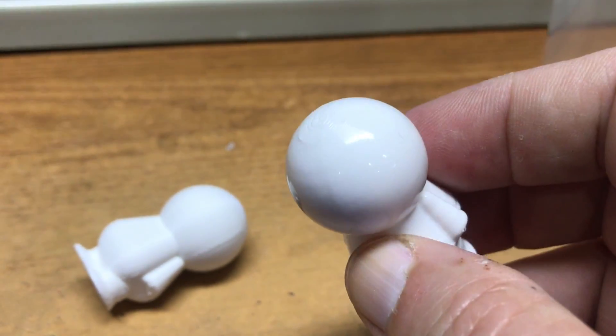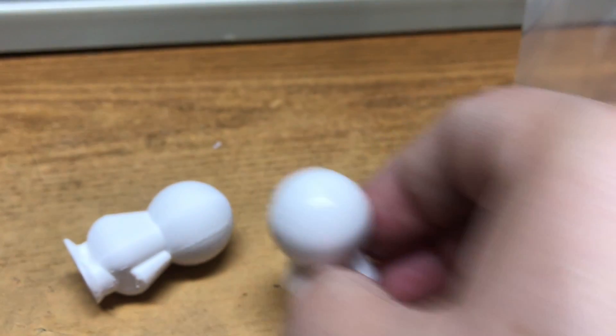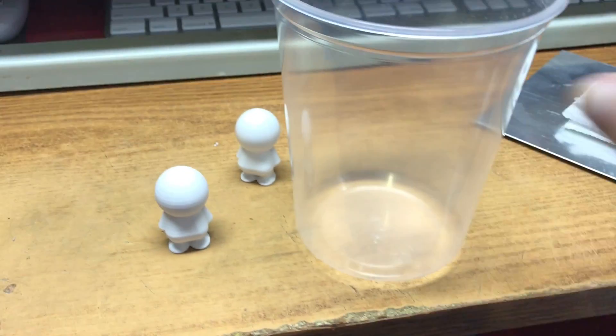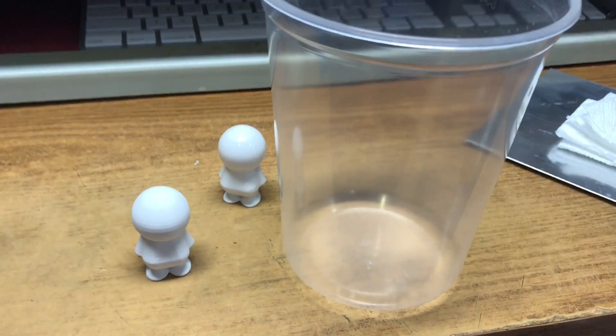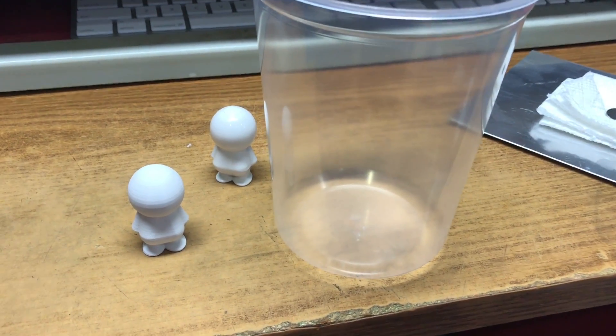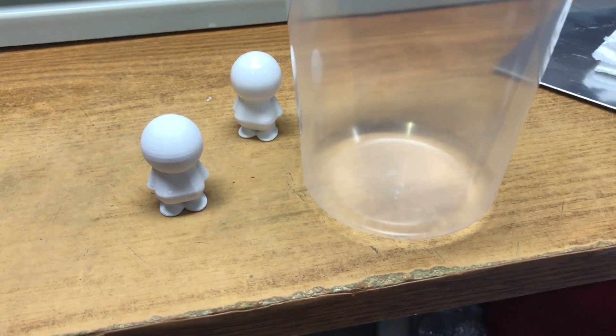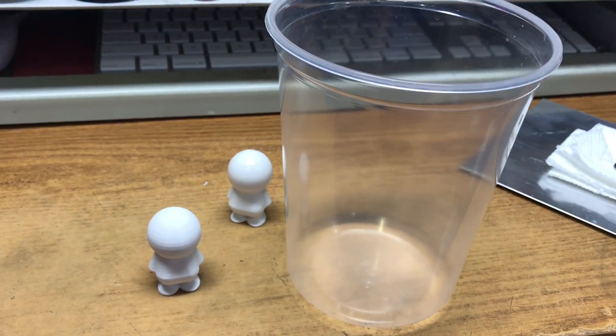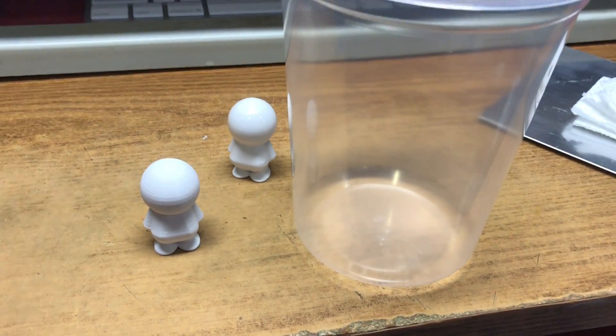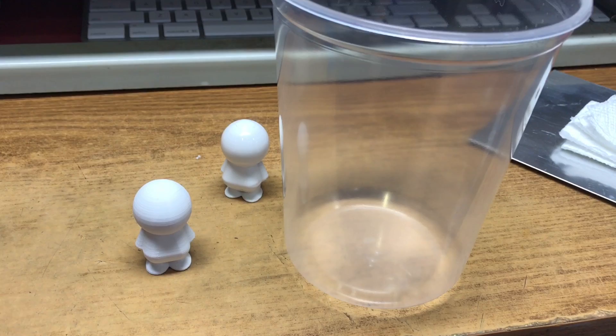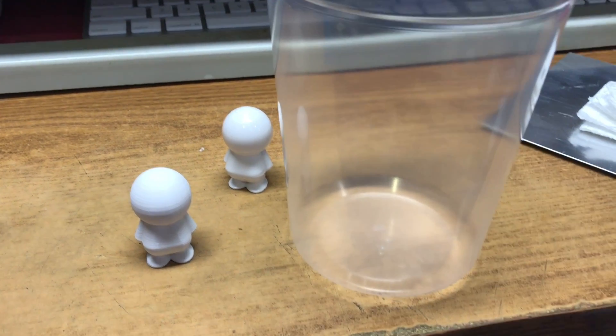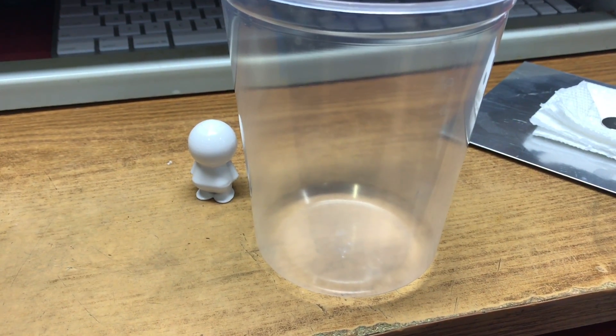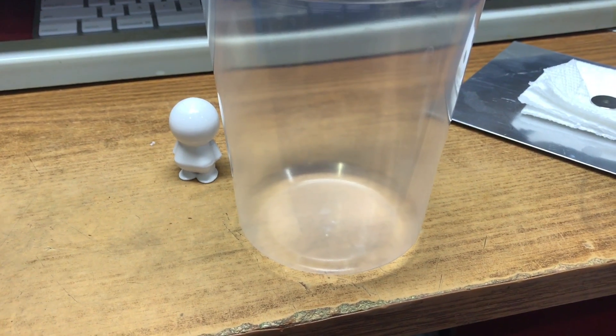So what I do is I take a container that's between six and ten times the size of the part. Why? Because if you make it smaller you run the risk of the paper towel touching. If you make it much larger then you might have to add acetone a few times because it has to fill a greater space. Here's what happens: acetone becomes vapor at room temperature, it's heavier than air.